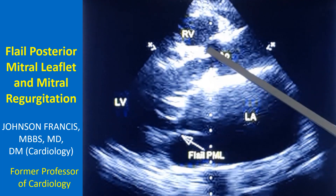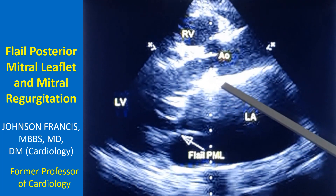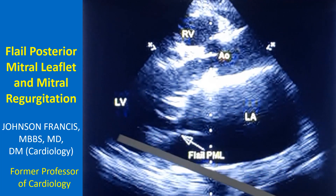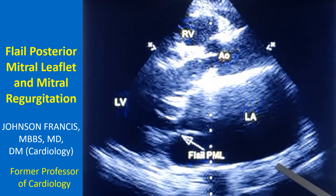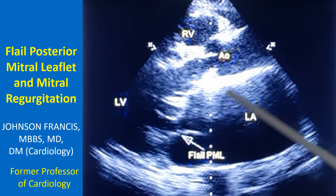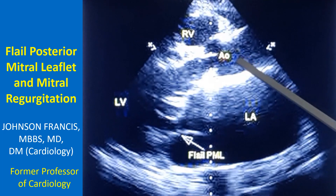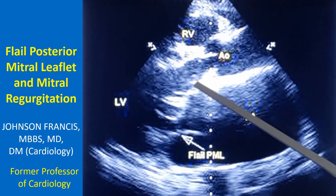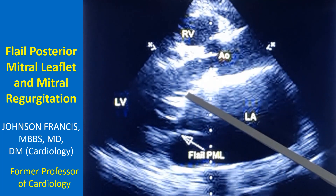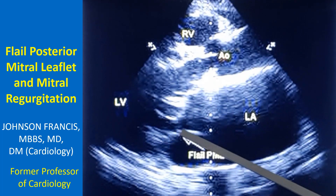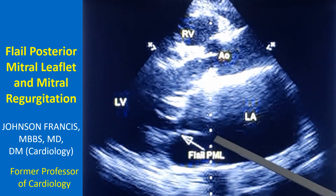Two aortic leaflets are seen in an open position. This is the left ventricular cavity, left ventricular posterior wall, left atrial posterior wall, and the descending aorta — cross section of the descending aorta. This is the ascending aorta. The anterior mitral leaflet is seen here in the closed position.